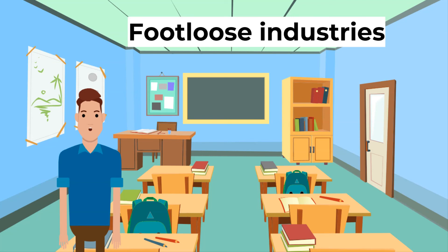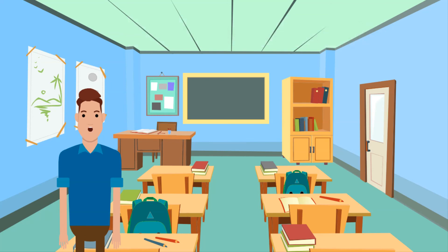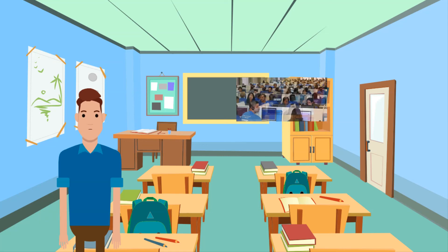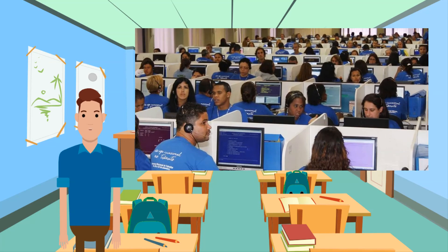Footloose industries are those that are less dependent on factors that tie them to a specific geographical location. Unlike manufacturing industries, tertiary or services companies do not have to be near a source of raw materials. As long as they have suitable transport, energy, and communications links, they can locate themselves anywhere in the world. Examples of footloose industries are computer software development, telephone sales, and call centers.